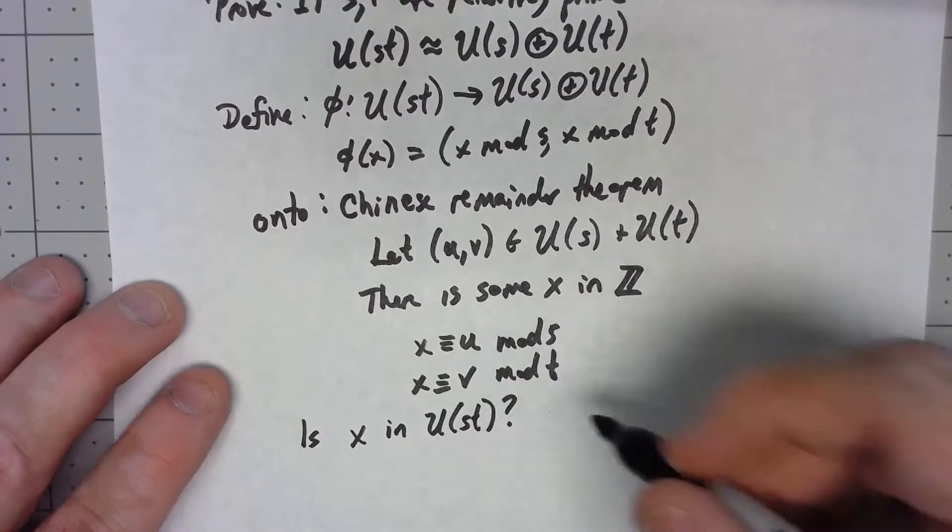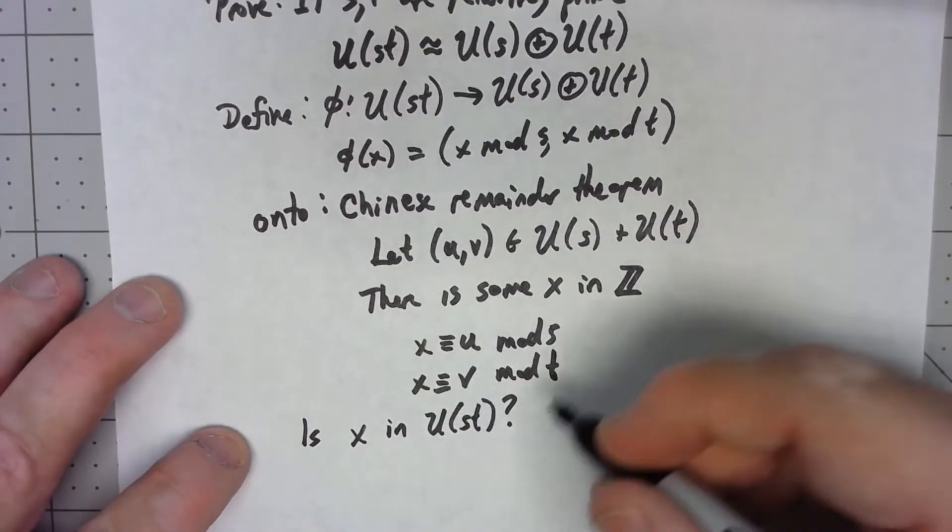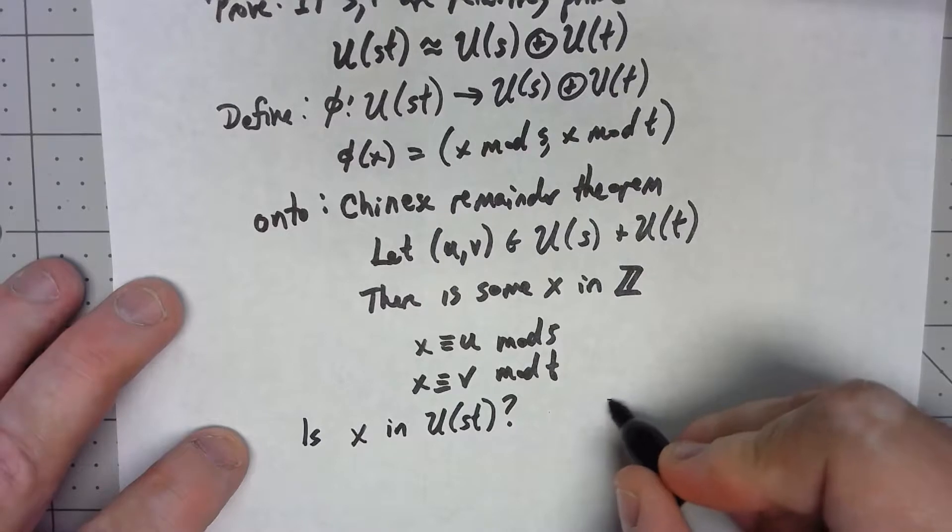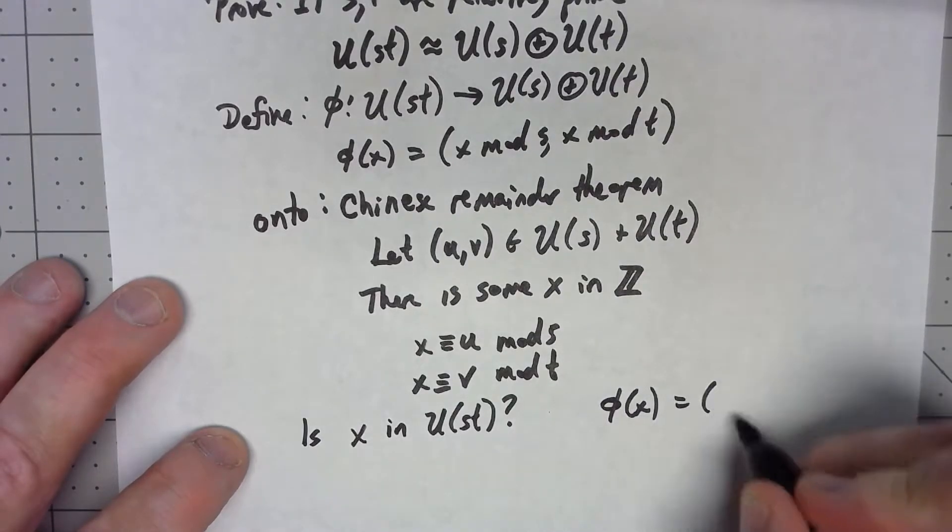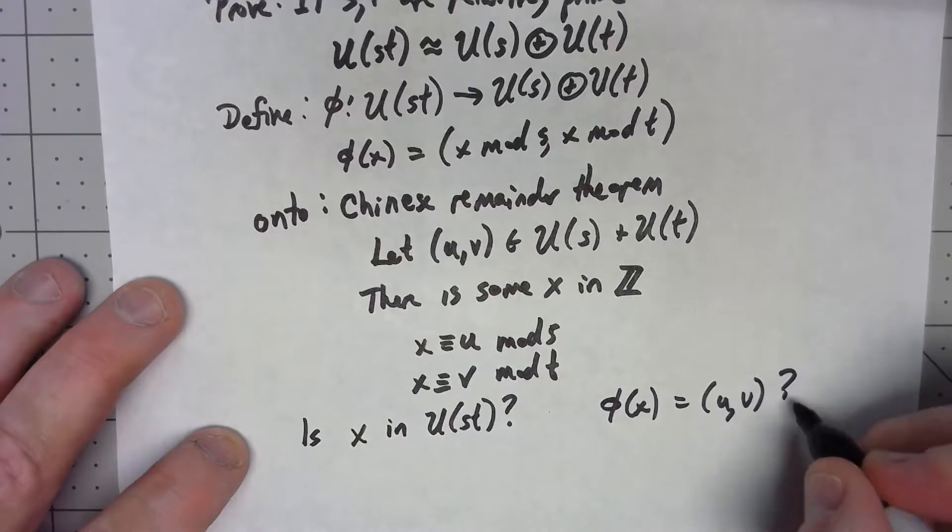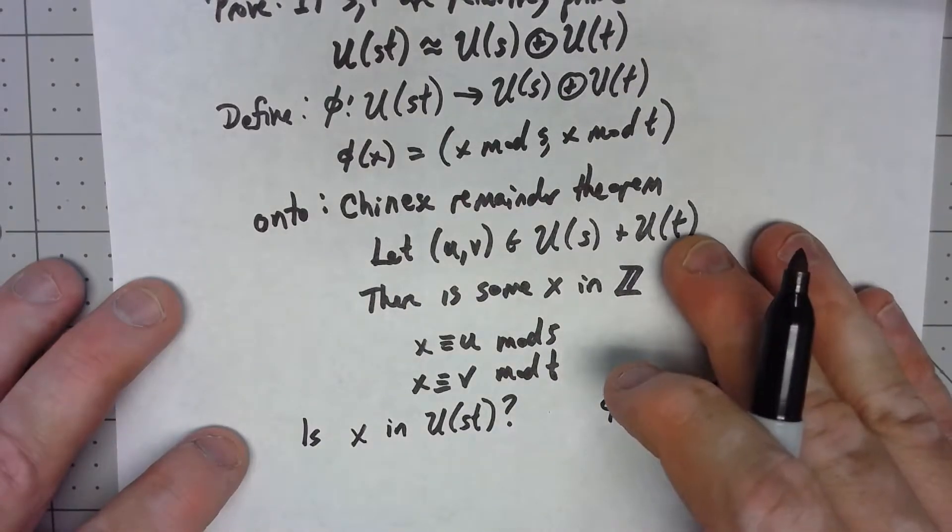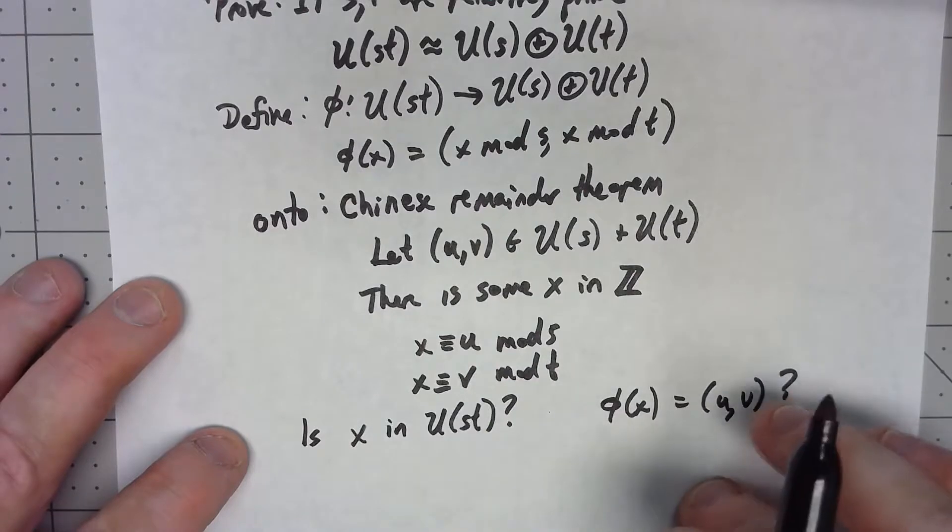And then further, once we've got that, does phi of x equal to (u, v)? Okay, so those two things we need to show.